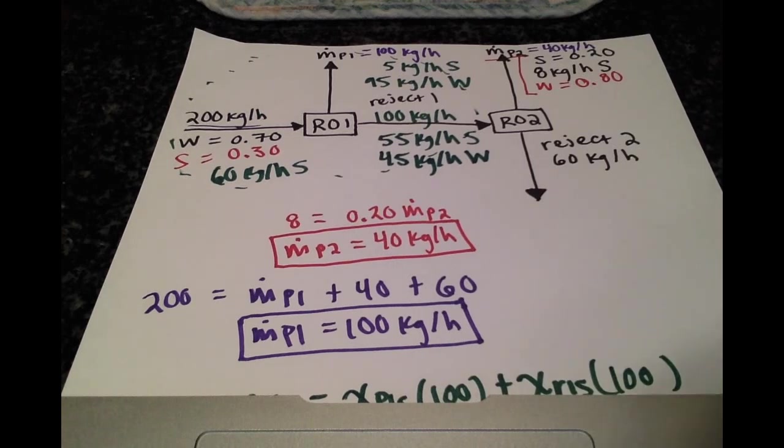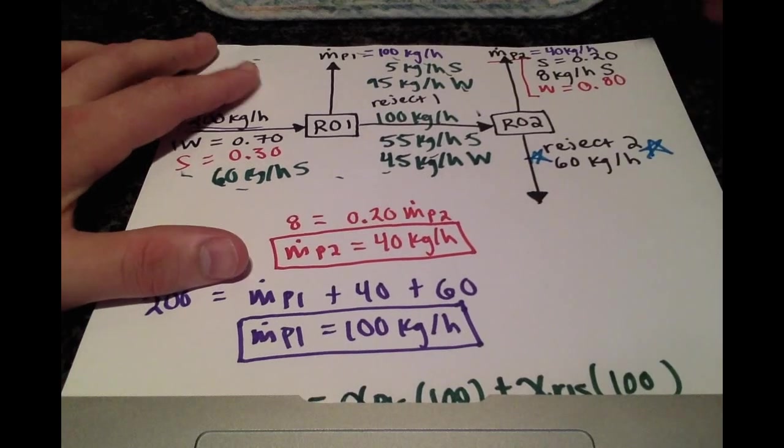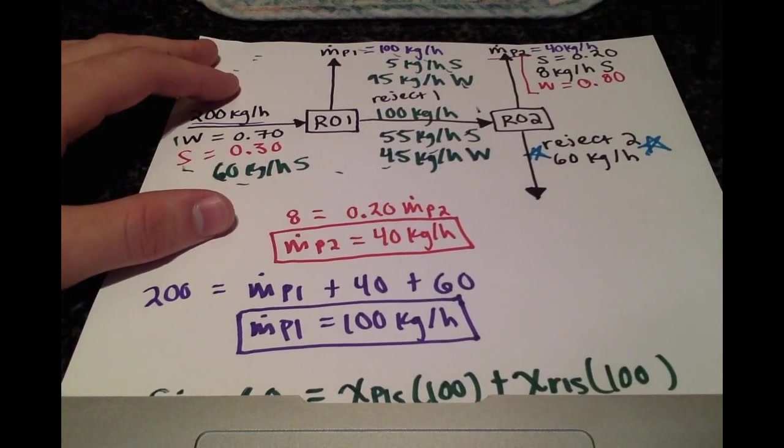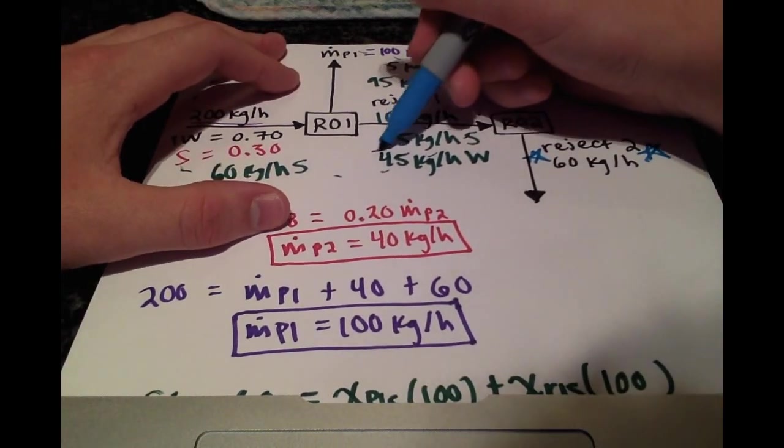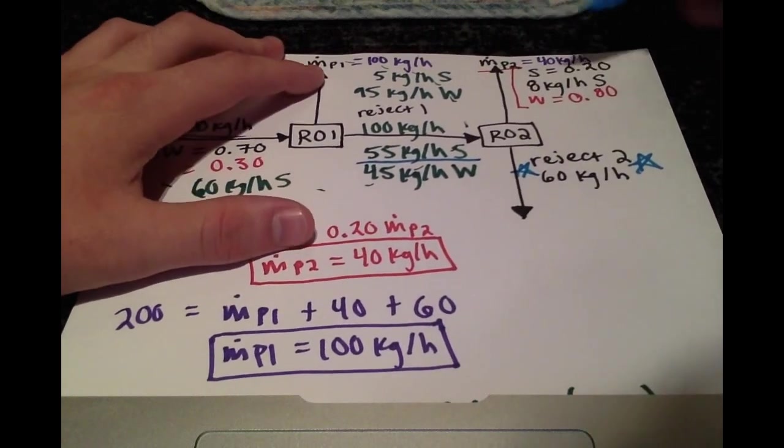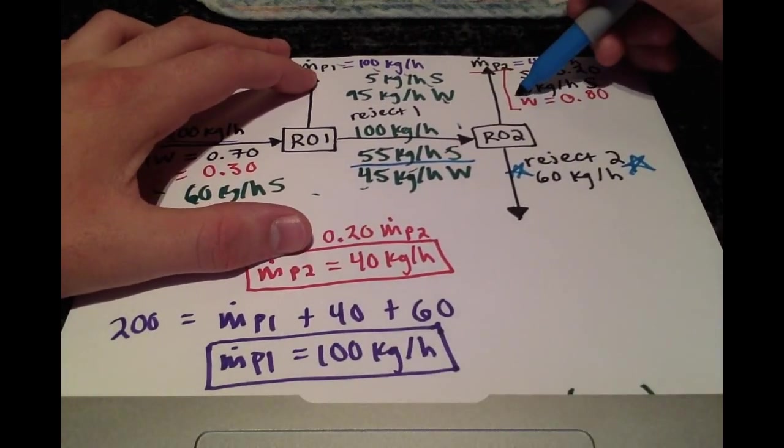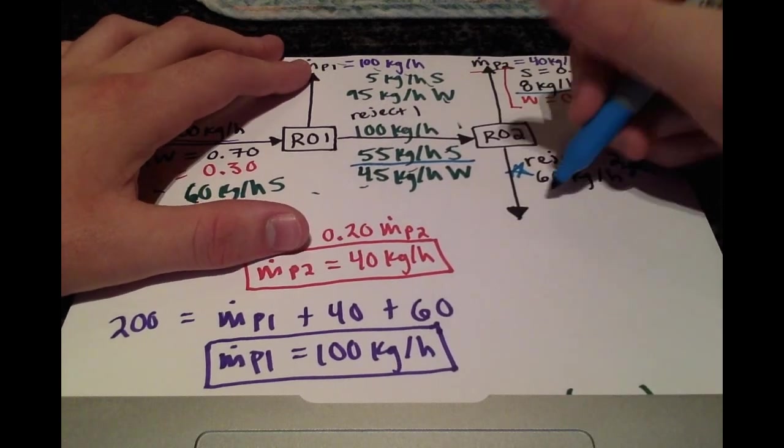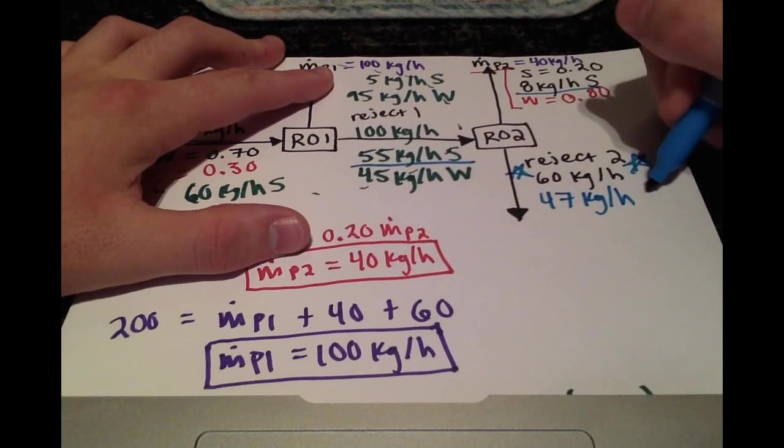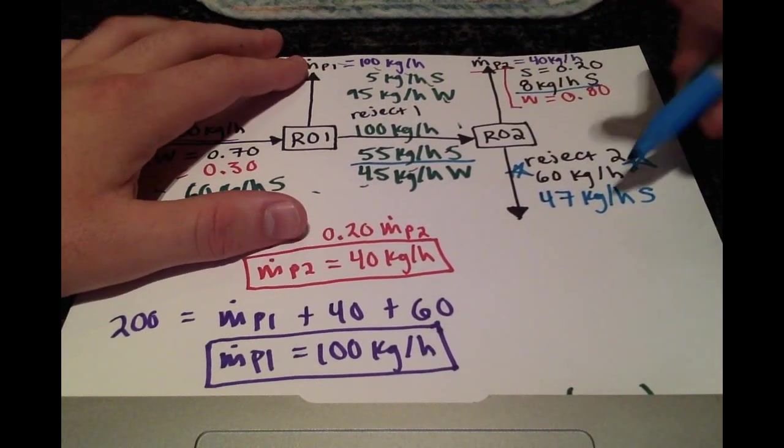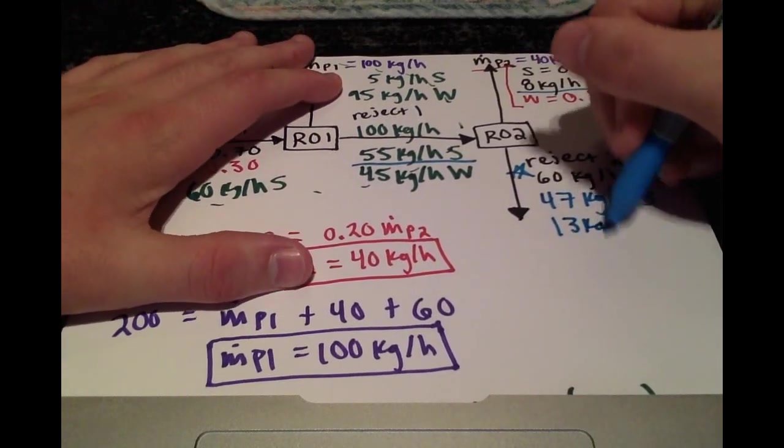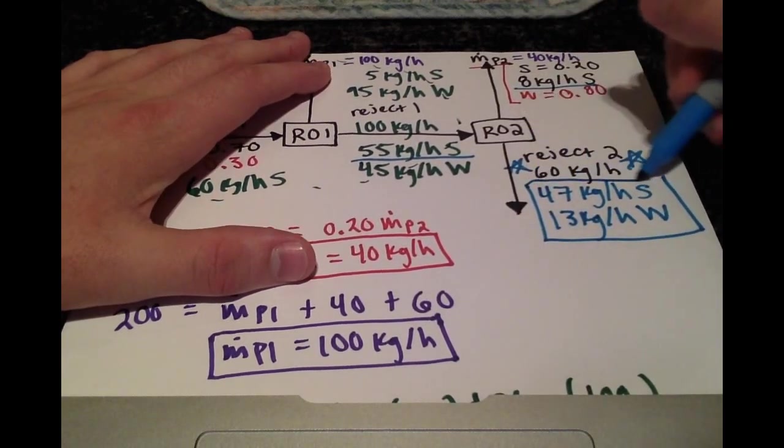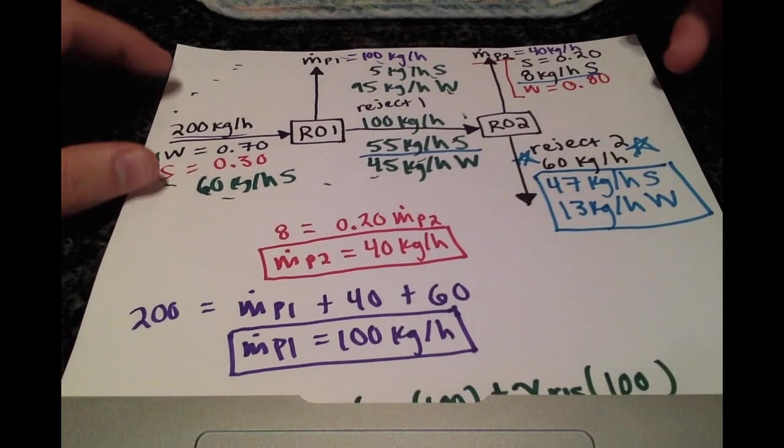That's to find out the information for the reject stream 2. We can figure that out by looking at what's coming in. With the salt, we see that we have 55 kilograms per hour of salt here and 8 kilograms per hour of salt here. So how much has to be coming here? That's just 47 kilograms per hour of salt. And then out of 60, there's 13 kilograms per hour left. That's going to be the flow rate of water. We have solved for all of our unknown values and answered the question.